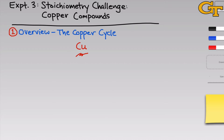To kick off this experiment, we'll begin with copper metal in the form of copper wire and subject it to 5 reactions that ultimately form a cycle coming back to copper metal at the end. The first reaction involves the conversion of copper zero, copper metal, to copper 2 nitrate, Cu(NO₃)₂. We'll observe this as a blue solution, so the brown wire will dissolve in nitric acid and become blue.